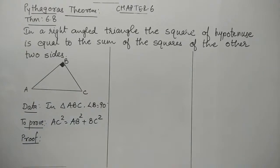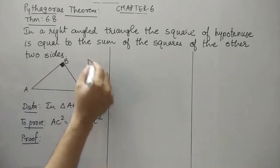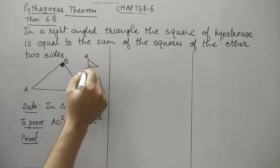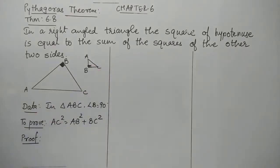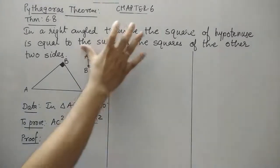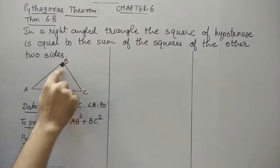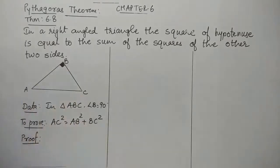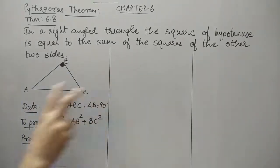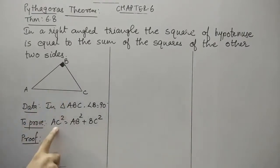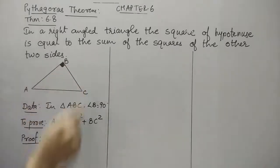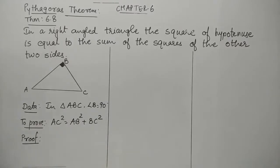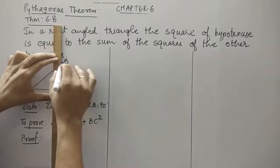Let's understand this in mathematical form. In triangle ABC, I have taken angle B as a right angle. AC is the hypotenuse and AB and BC are the two sides forming the right angle. So what the statement says is: the square of the hypotenuse, that is AC², equals the sum of the squares of the other two sides. Now let us prove this. To prove it, we will draw a perpendicular from B to AC.